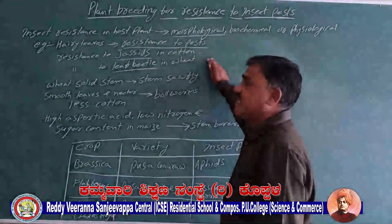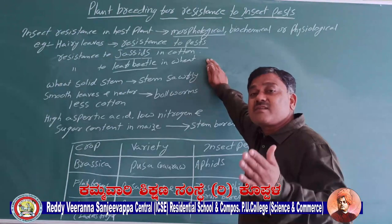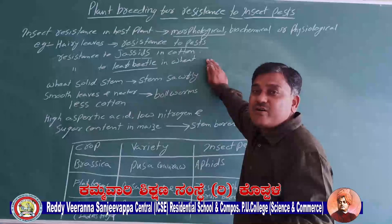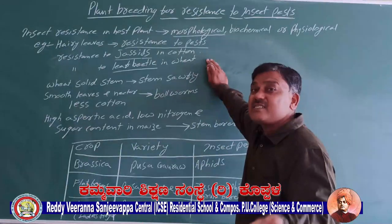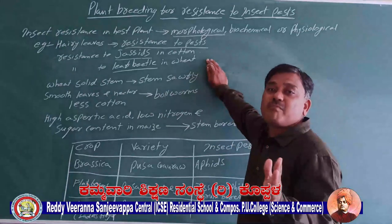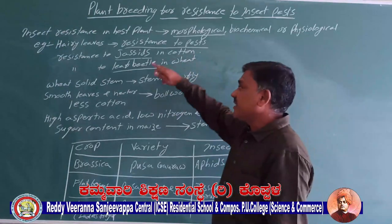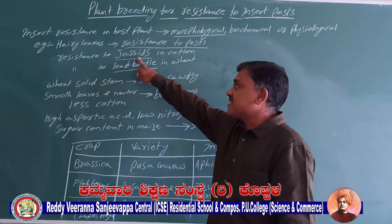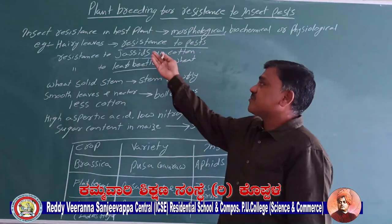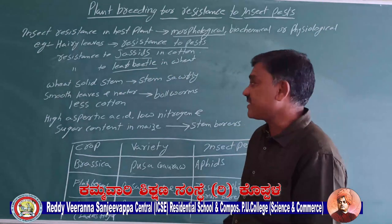These are the morphological characters. Some crop plants have special morphological characters that make them resistant against a number of pests. Jassids and leaf aphids are insects that are sensitive to those characters.